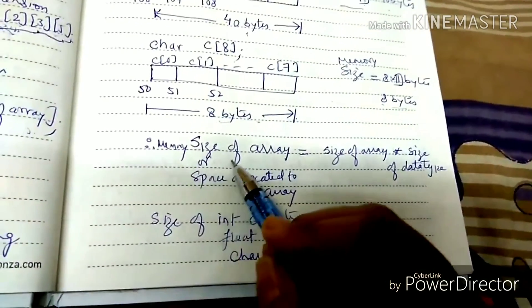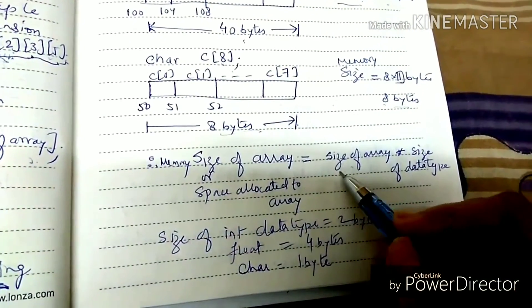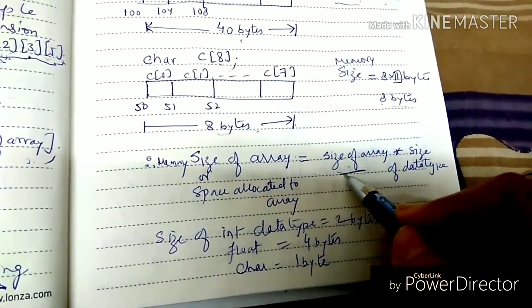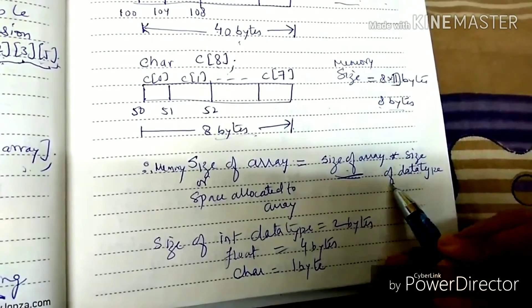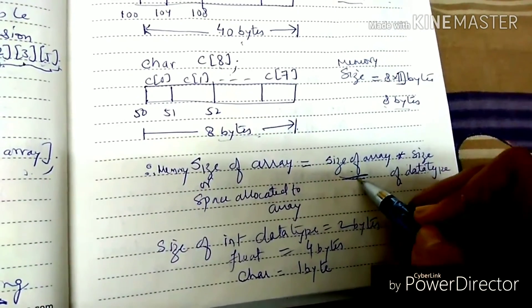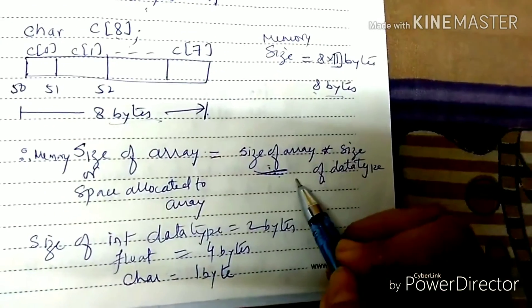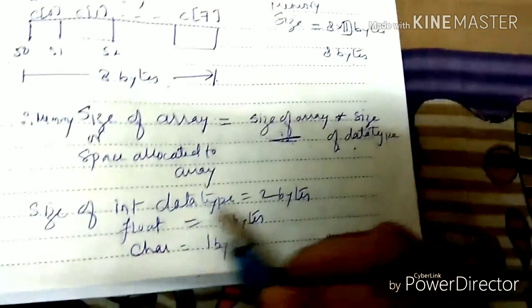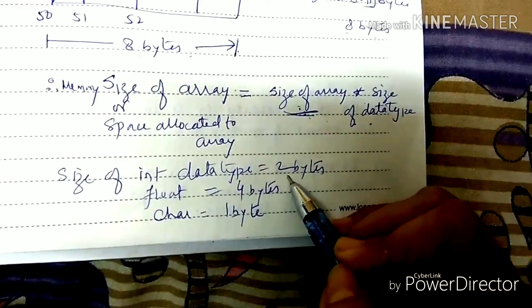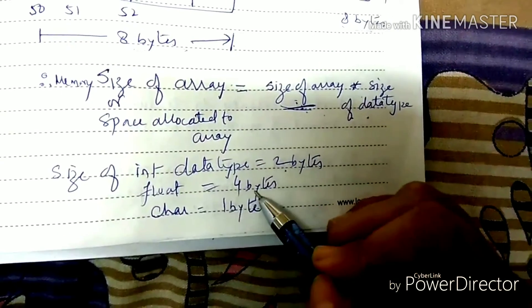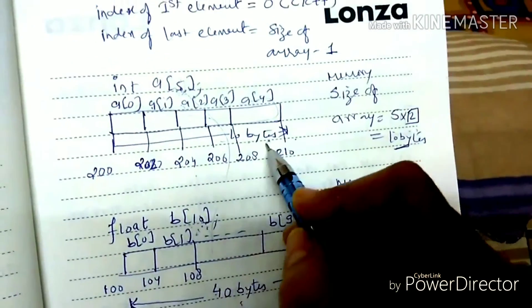So what is the formula? Any array that has memory allocated is equal to size of array multiplied by size of data type. Integer data type size is 2 bytes, float is 4 bytes, character is 1 byte. So this type of memory is allocated.